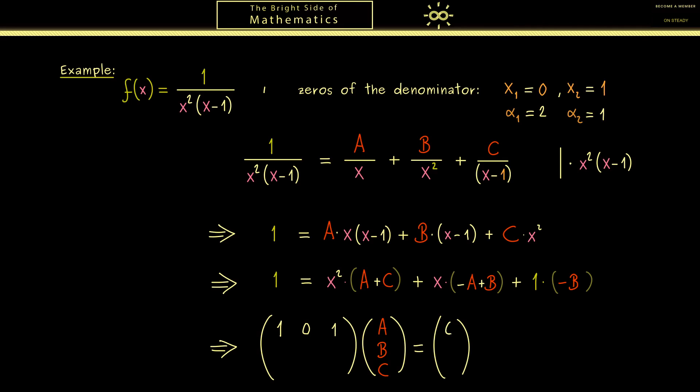Then the second equation minus A plus B equals 0 reads as minus 1 plus 1, 0, 0.